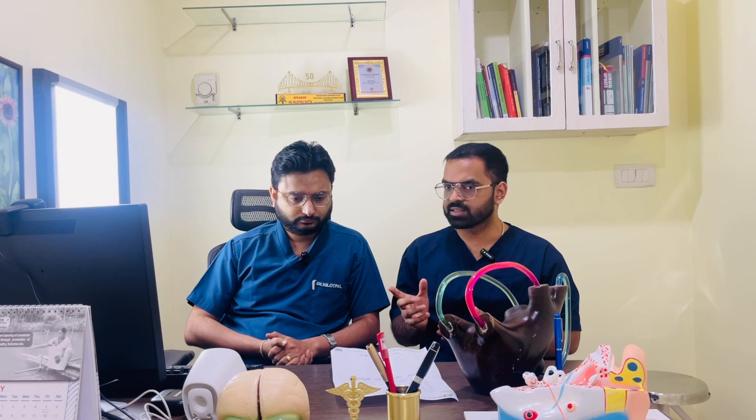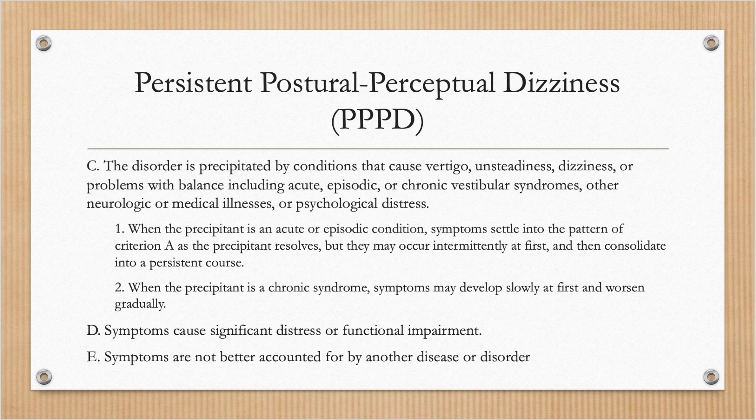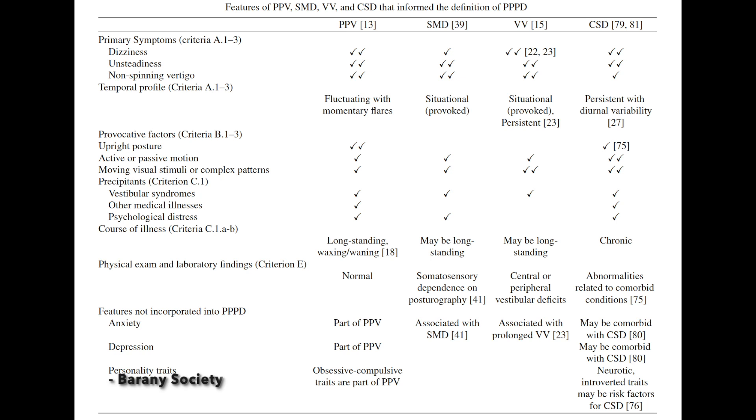Regarding functional dizziness — what are the pointers in history toward a functional rather than organic cause? The first rule is the patient comes not with rotatory dizziness but with non-rotatory unsteadiness. There is a persistent feeling of swaying sensation for at least three months. The swaying is waxing and waning — sometimes worse, sometimes better. The patient develops an extreme fear of falling, aggravated in open areas like marketplaces, shopping malls, railway stations, and airports.